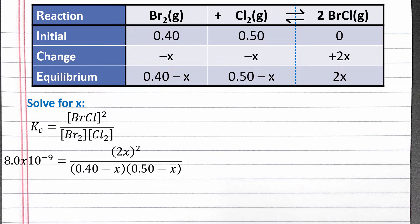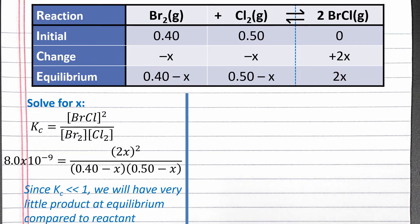Although we could use the quadratic formula to solve for x, we can notice that the value of Kc is very, very small. This means we will have very little product at equilibrium compared to reactant. 2x represents the amount of product we will have at equilibrium in our RICE table. Since this value must be very small, x is very small. And if x is very small, then 0.40 minus x should be about equal to 0.40, and 0.50 minus x should be about equal to 0.50.